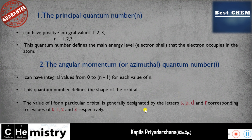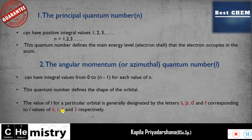You should know these correctly; otherwise you will be unable to get the correct answer for such questions. To summarize: l equals 0 for the s subshell, l equals 1 for p, l equals 2 for d, and l equals 3 for the f sub-energy level. These assignments you must know correctly under the angular momentum quantum number.